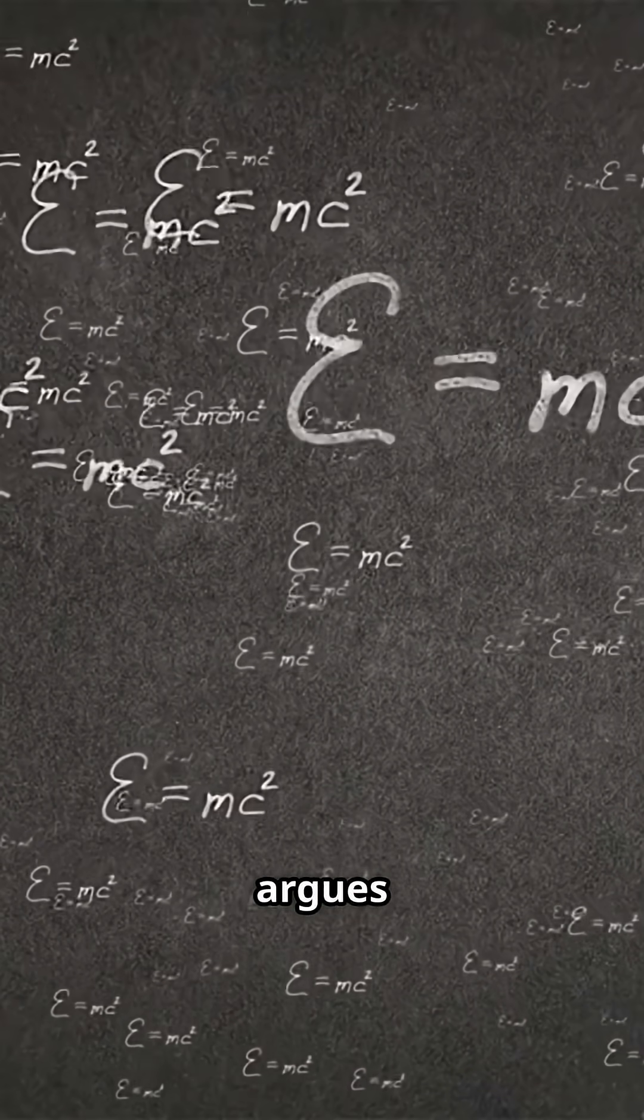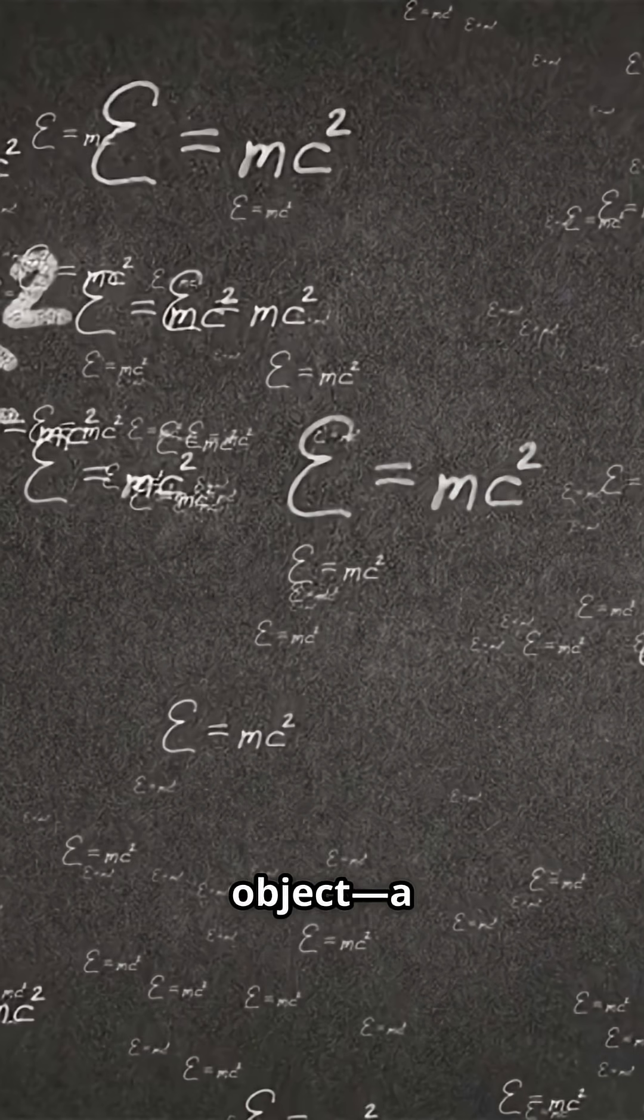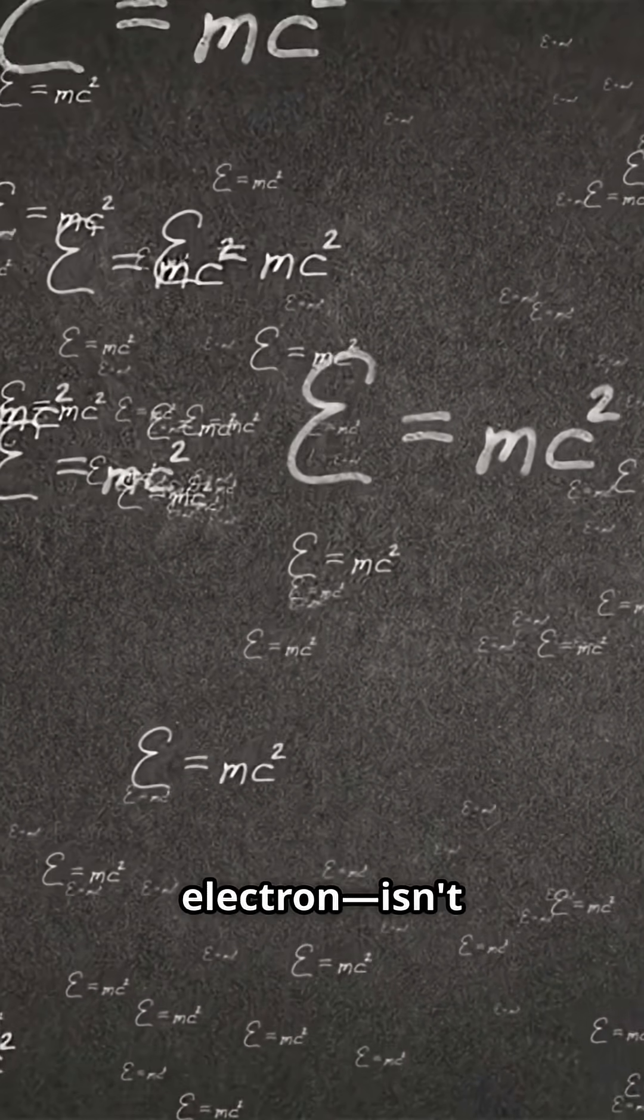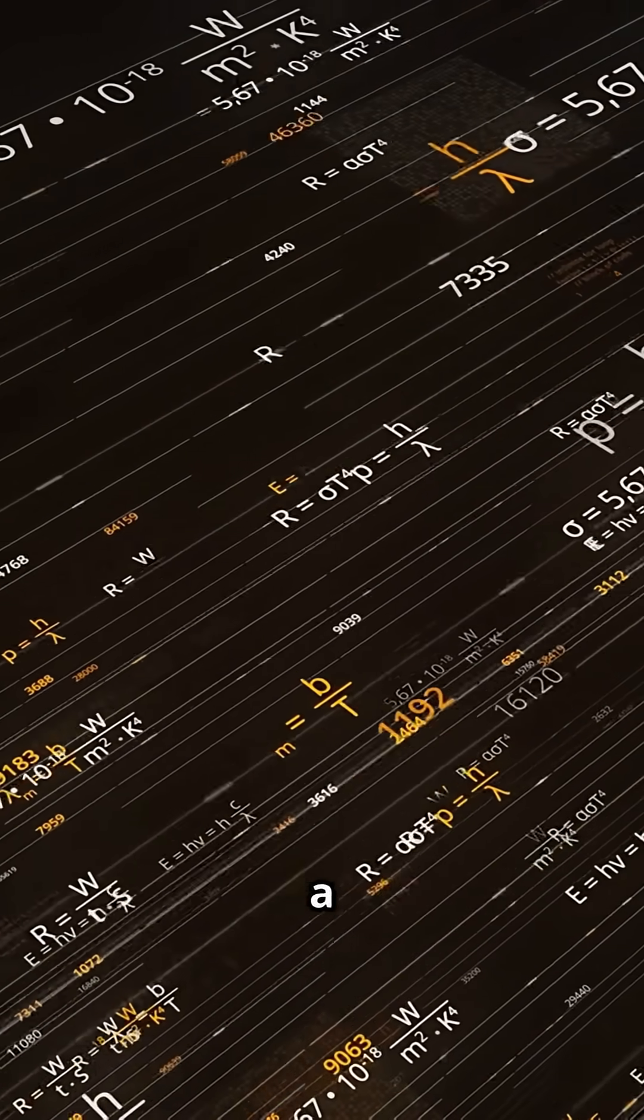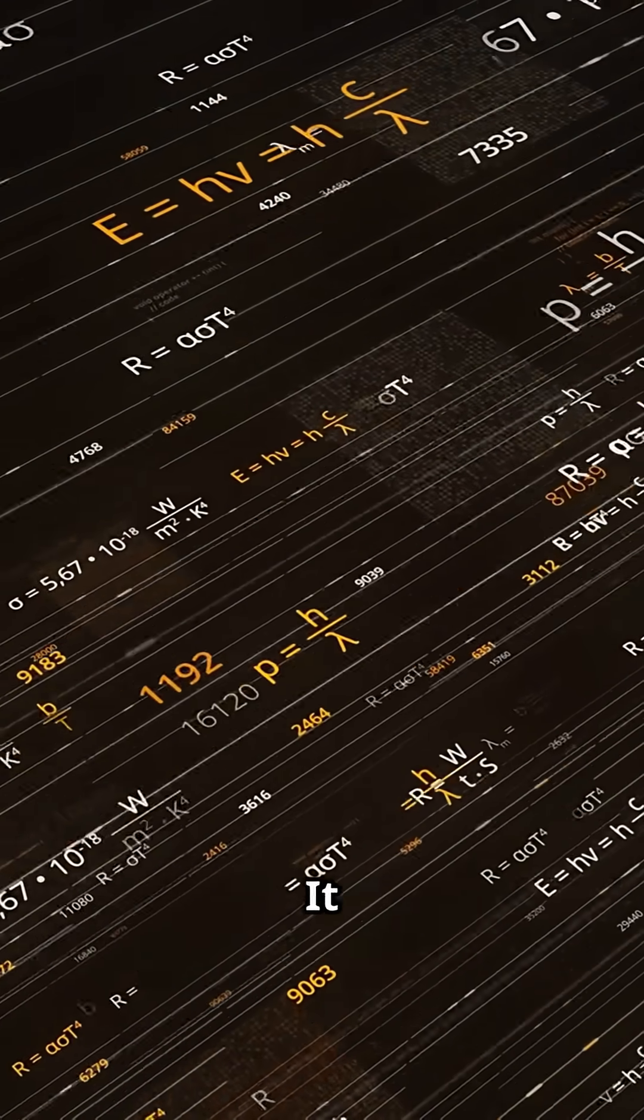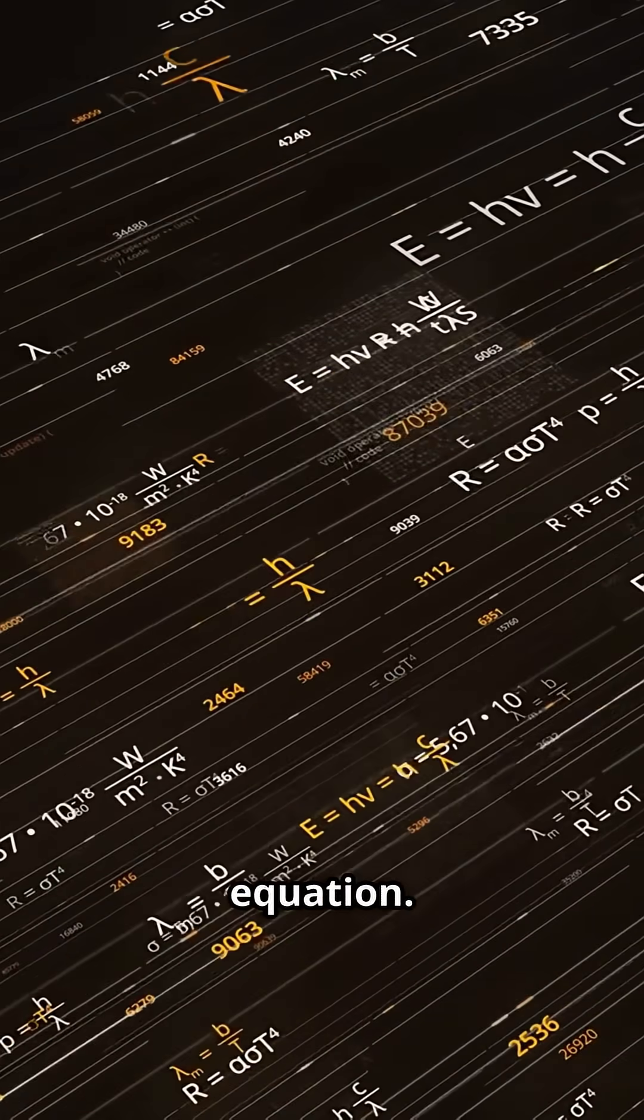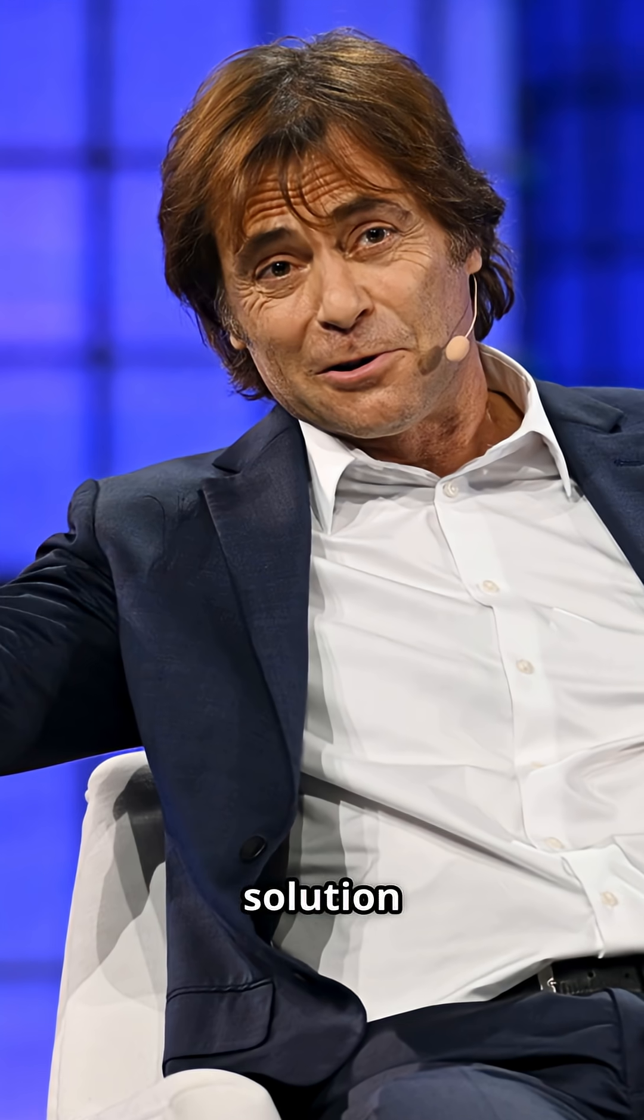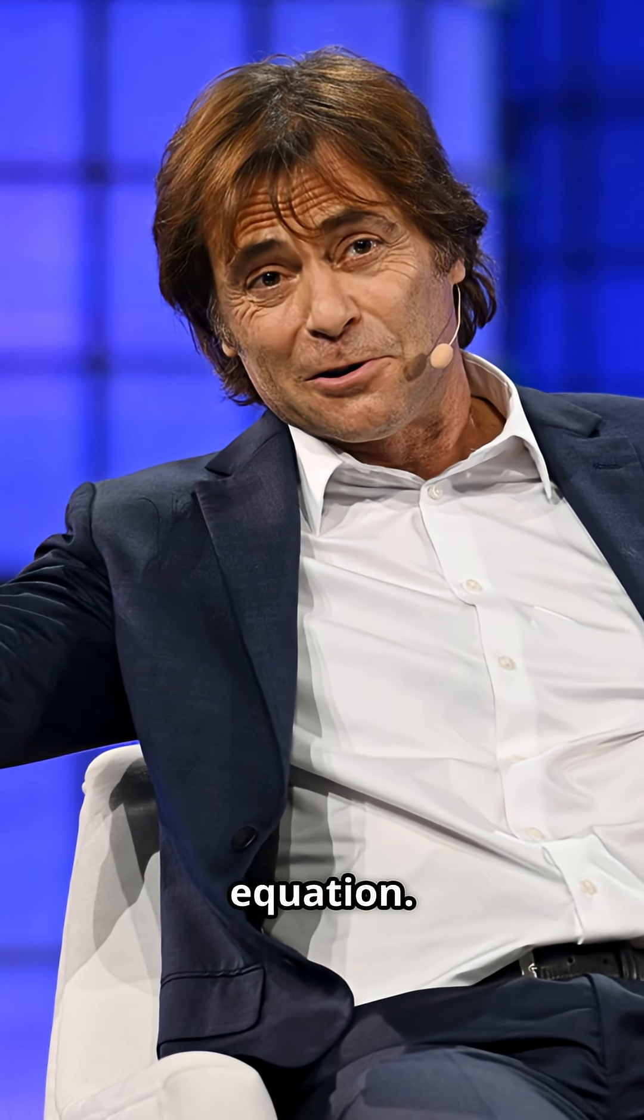He argues that every single object, a table, your hand, an electron, isn't just governed by a mathematical equation. It is that equation. An electron is just a solution to the Schrodinger equation. This leads to a shocking conclusion.